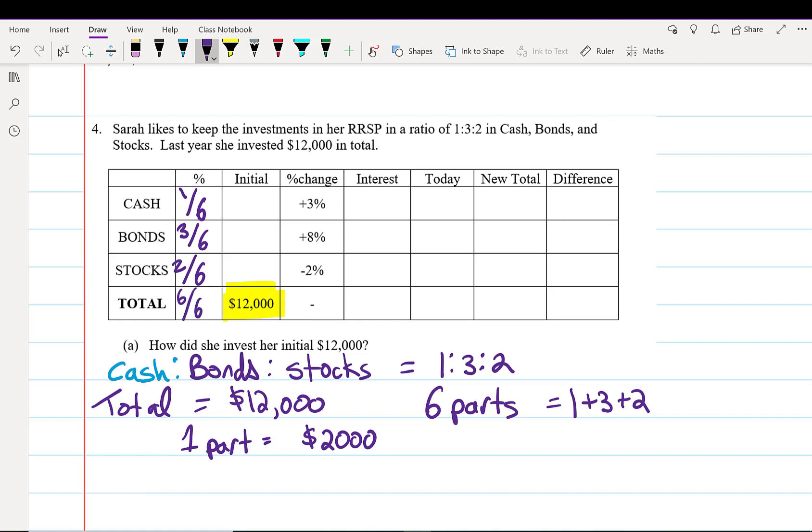Since each part is $2,000, I'm going to fill that in. Three parts is going to be 3 times $2,000, which is $6,000. And finally, two parts is going to be 2 times $2,000, which is $4,000. When I add those together, they do add up to $12,000.